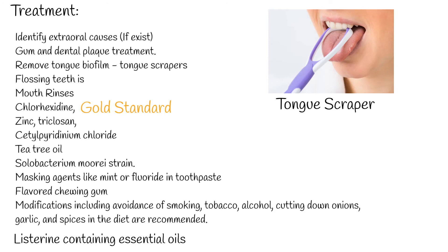Chlorhexidine is considered the gold standard mouth rinse for halitosis treatment. Usage of Listerine containing essential oils resulted in significant reduction in halitosis-producing bacteria in healthy subjects. Triclosan, a broadly used antimicrobial agent, is known to reduce dental plaque, gingivitis, and halitosis. Using Triclosan dentifrice and a toothbrush tongue cleaner produced a significant reduction in organoleptic scores and mouth volatile sulfur levels.